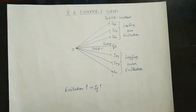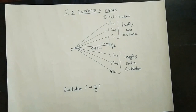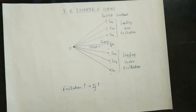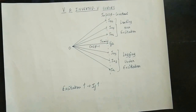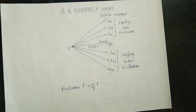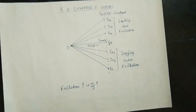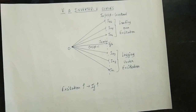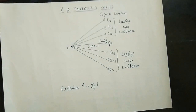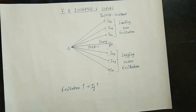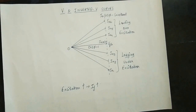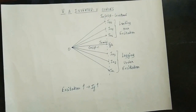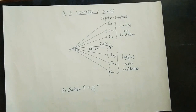Now, what we are going to do is increase the excitation. This is how we set the parameters — we can plot the V curve and the inverted V curve. How do we vary the excitation? Basically, we adjust the field current. We adjust the DC supply, and increase the current in the field to increase the excitation.